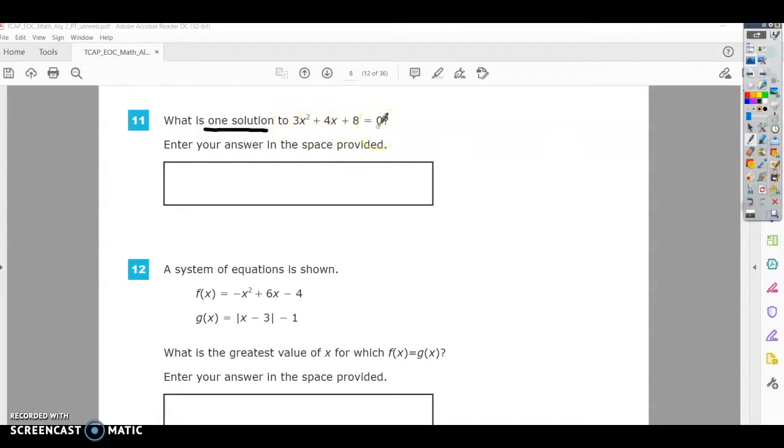All right, so the first thing I need to do is say, okay, I'm going to use quadratic formula to solve this. And you have to know the quadratic formula because it's not on your formula sheet. So remember, negative b plus or minus the square root of b squared minus 4ac over 2a.